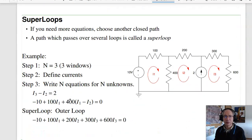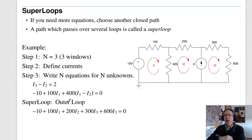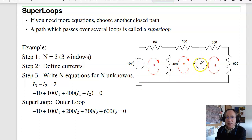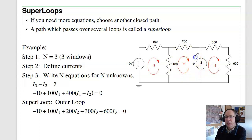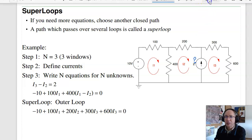A super loop arises when I can't write the loop equation — for example, if I have a current source. I can't write the voltage across a current source because it provides whatever voltage it takes to maintain the current. If I try to write the loop equation around I2 or I3, I don't know what that voltage is and can't sum voltages to zero. That's where super loop comes into play.